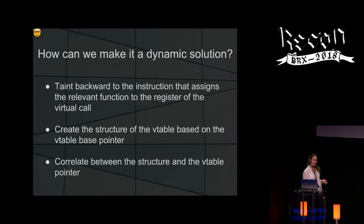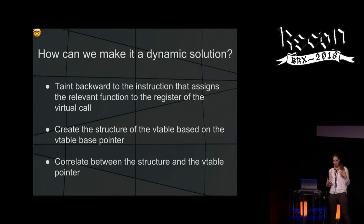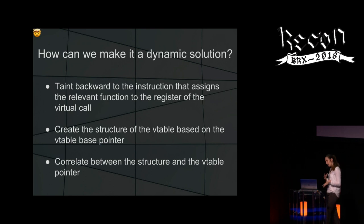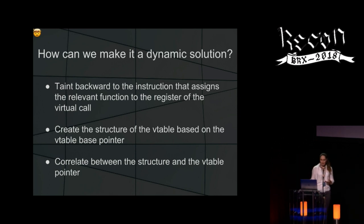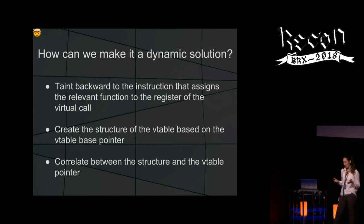How to make it a dynamic solution? We know there is the virtual call assignment to a register. If I can find the right virtual calls, why not trace backward and find the instructions that assign the Vtable to the right register? Then I can create a struct with the Vtable, add references, and make the entire C++ reverse engineering process automated.